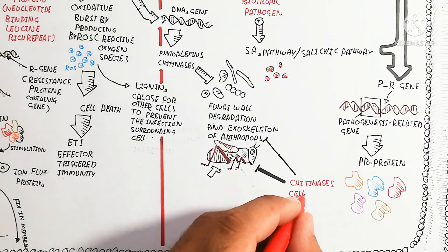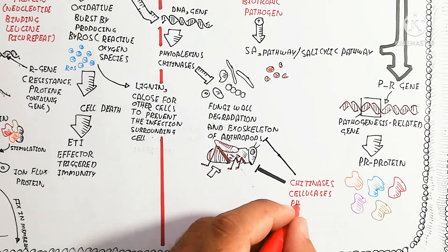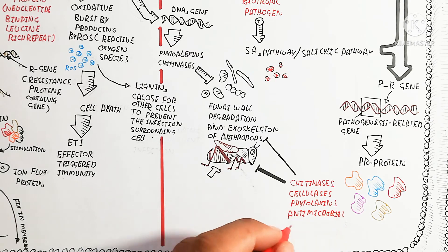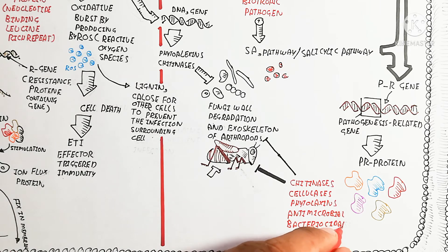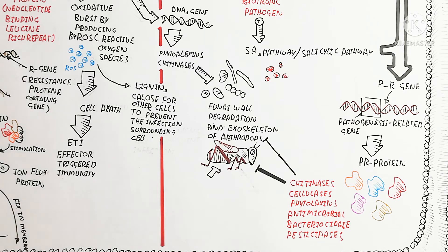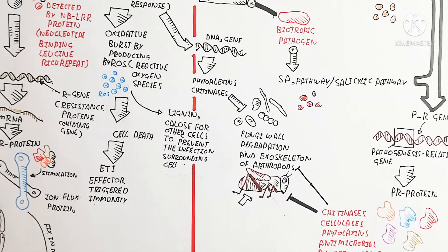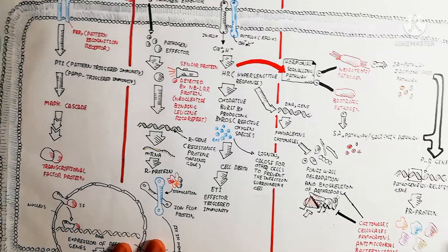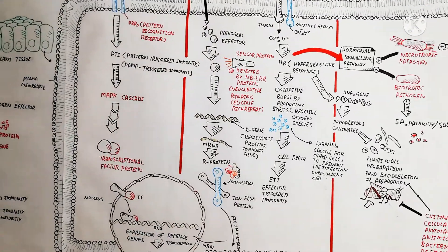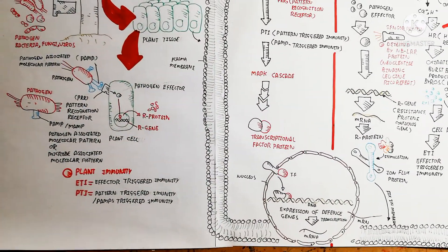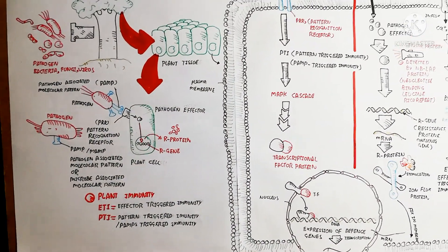To summarize: necrotrophic pathogens cause cell death, while biotrophic pathogens do not kill the plant cell — the plant cell survives. This was the immune system of the plant cell, which prevents and inhibits disease. I hope this made sense.